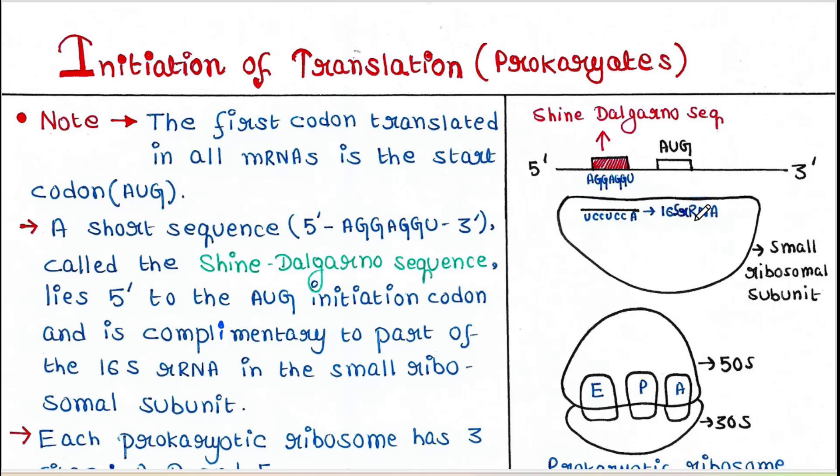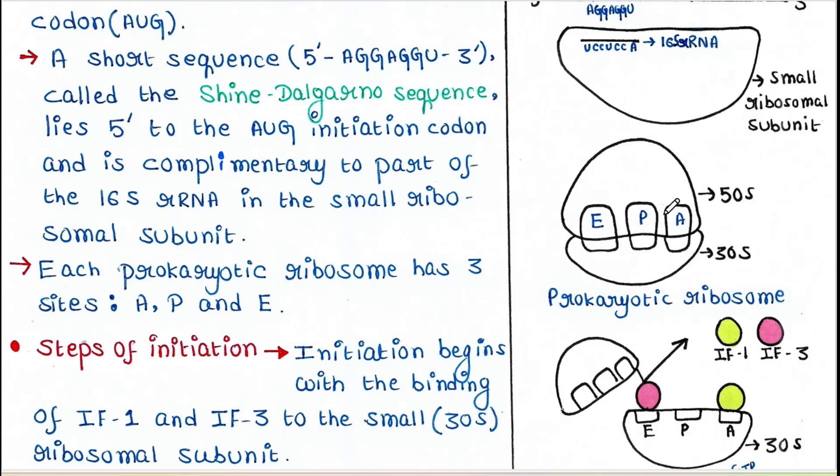Prokaryotic ribosome contains two subunits, large and small. Large is 50S and the small is 30S, and this ribosome has three sites: A, P, and E.